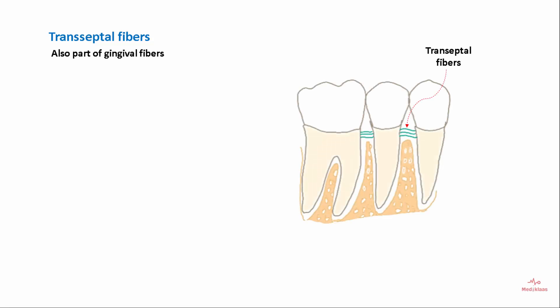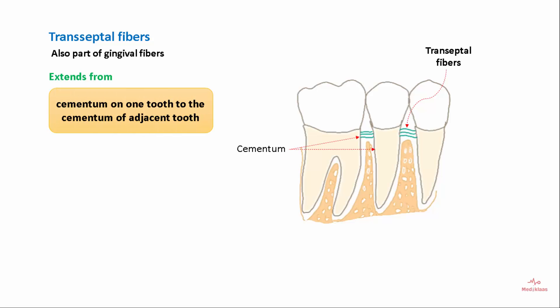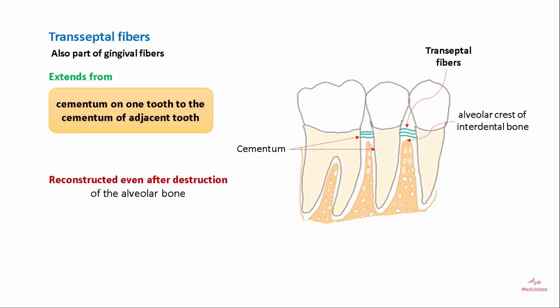The transseptal fibers are also part of the gingival fibers. They extend from the cementum of one tooth to the cementum of the adjacent tooth, and they are reconstructed even after destruction of the alveolar bone.